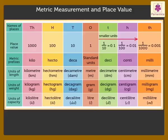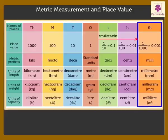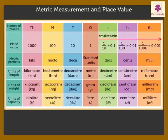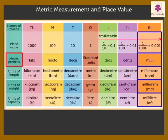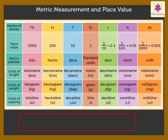Similarly, the units in the thousandths column are one thousand times smaller than, or one thousandth of, the standard units. We name these as millimetre, milligram, and millilitre, as the prefix 'milli' means one thousandth.